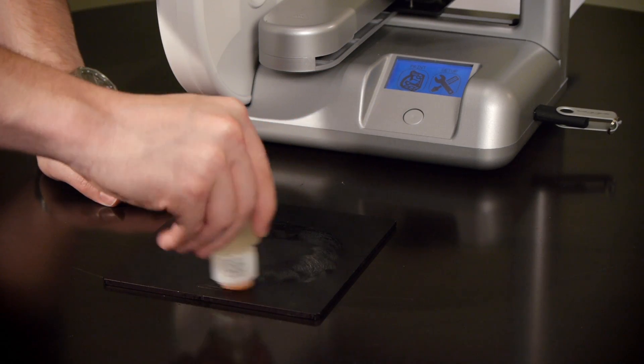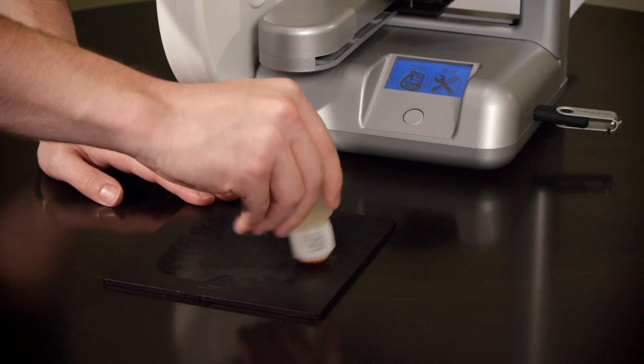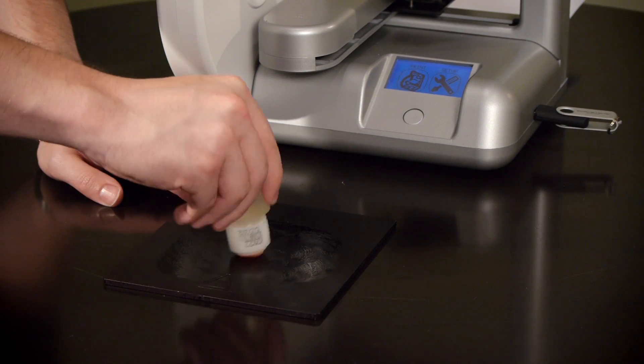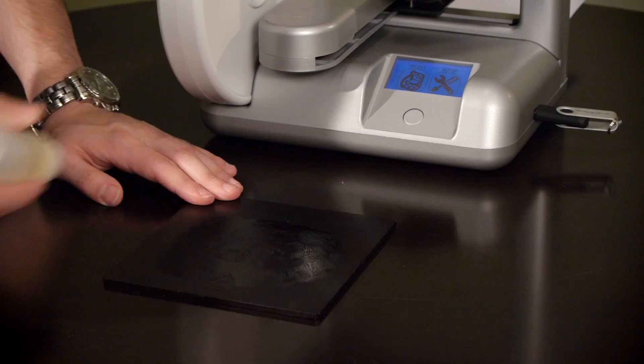Just before you print, take off the print pad and apply the cube glue, so that your piece will stay put. Go in circles for a thin, even coat covering all areas you'll be printing on it.